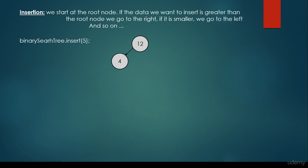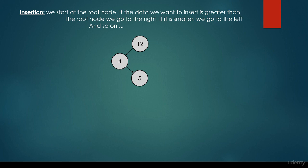What about the 5? We come to the conclusion that it is smaller than the root node, so we go to the left. But it's greater than 4, so we go to the right. But the 4 doesn't have any right child, so we insert this 5 to be the right child of 4.